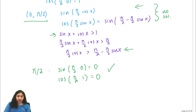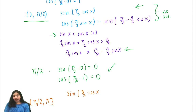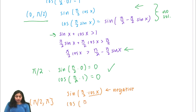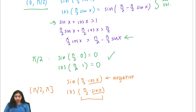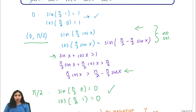Then we look at the range from π/2 to π. Our sine expression will always be negative because cosine x is negative in this range, and sine of a negative number is negative. Our cosine expression will always be positive because sine x is positive in this range, keeping the argument between 0 and π/2 where cosine is always positive. Since the two sides have different signs, there are no solutions in this interval.